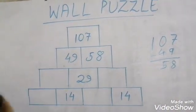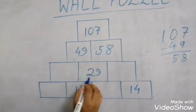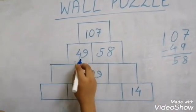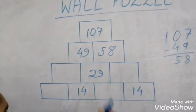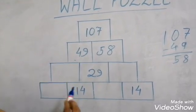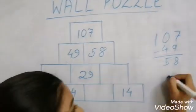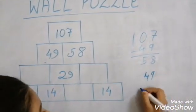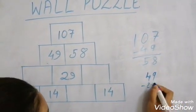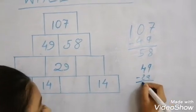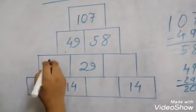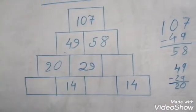Next. Dash plus 29 is equal to 49. So to get the number here we should subtract 29 from 49. So 49 minus 29 is equal to 20. So we will write here 20.